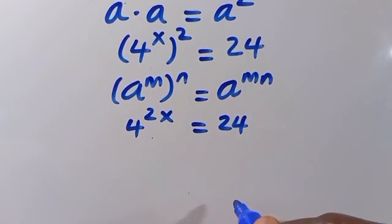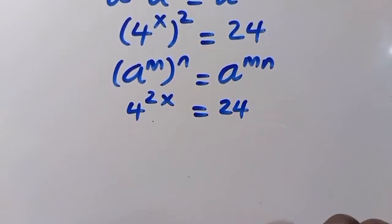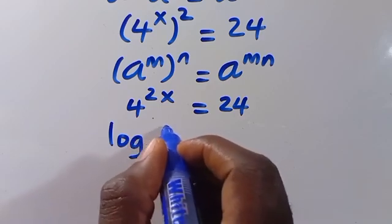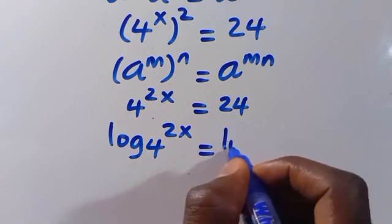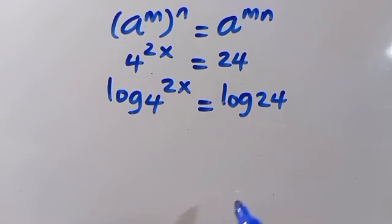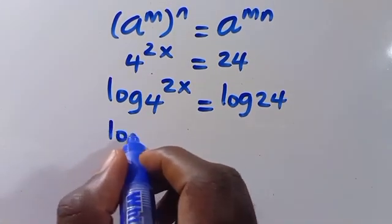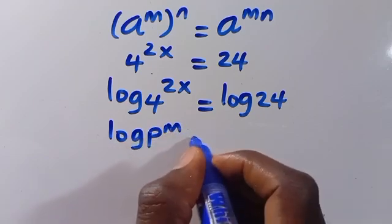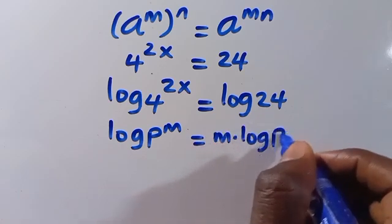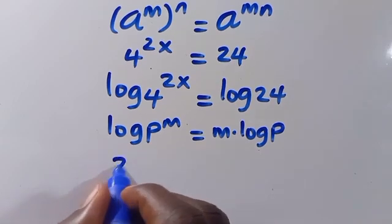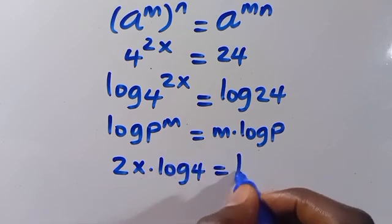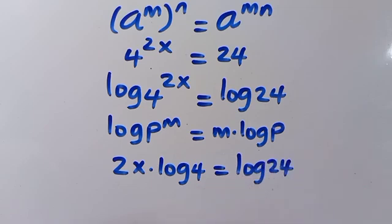The next thing we can do is introduce log to both sides of this expression. So we have log of 4 to the power of 2x equals log 24. Then, when we have log of p to the power of n, we can bring the exponent down as n multiplied by log p. So here we have 2x times log 4 equals log 24.